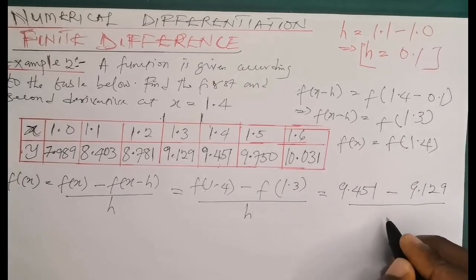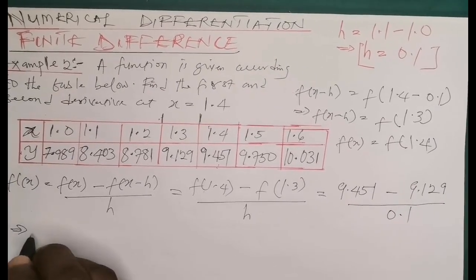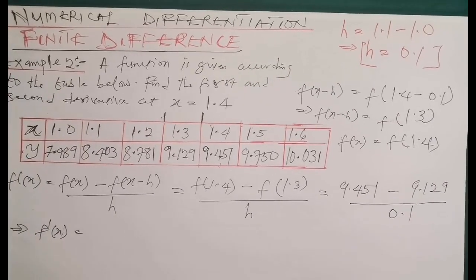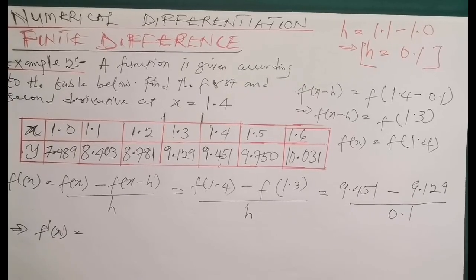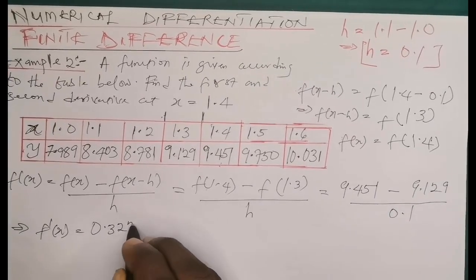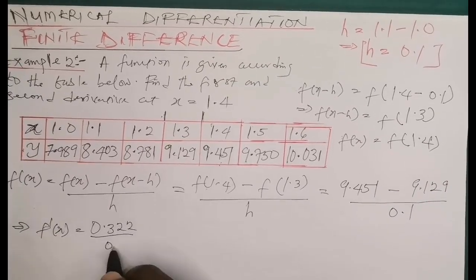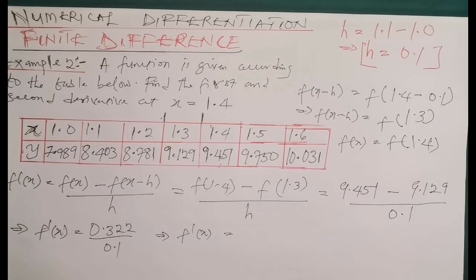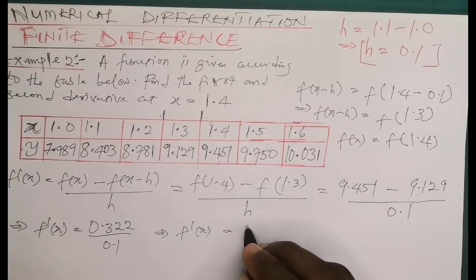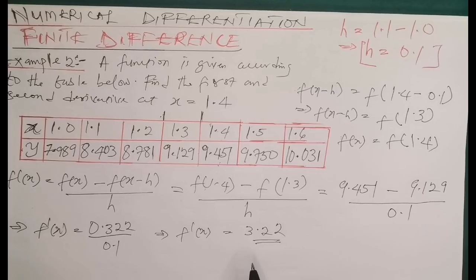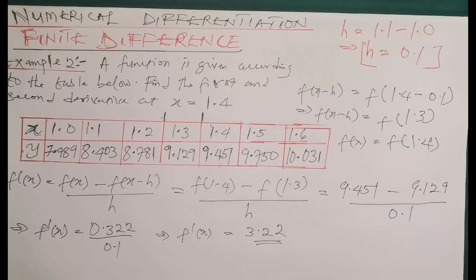So the first derivative equals 9.451 minus 9.129, all over h. That gives 0.322 divided by 0.1, which is approximately 3.22. So the approximate value of the first derivative is 3.22. The question also asks for the second derivative, so we now consider that.